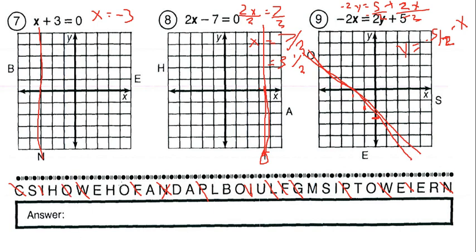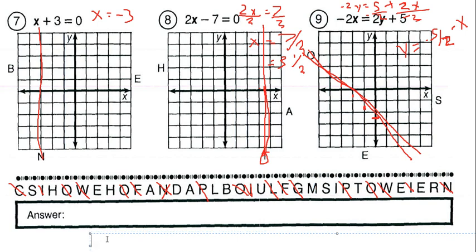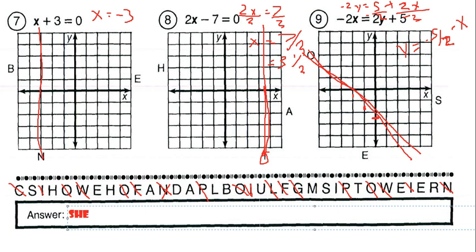Now we can solve the answer. Looking at the remaining letters — including that L we crossed out — the answer is: she had a bum steer.